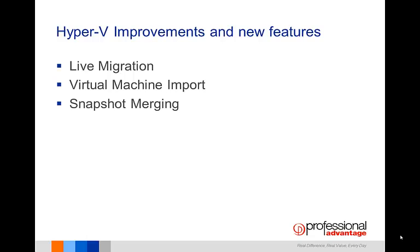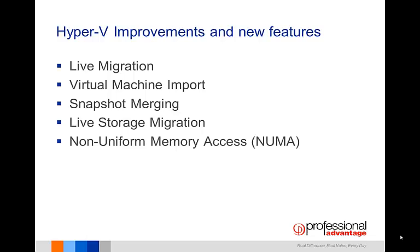In Windows 2008 R2, merging a snapshot into a parent virtual machine required the virtual machine to be switched off for the duration of the merge operation. This has been improved in Windows Server 2012, where the Hyper-V Live Merge feature allows snapshots to be merged back into the virtual machine while it continues to run. Windows Server 2012 Hyper-V now supports incremental backup of virtual hard disks while the virtual machine is running. Live storage migration allows users to move virtual hard disks attached to a running virtual machine without downtime. Non-uniform memory access, or NUMA, is a new feature supported inside virtual machines that provides enhanced performance on large virtual machines by enabling the guest OS and applications to access local memory faster than remote memory.